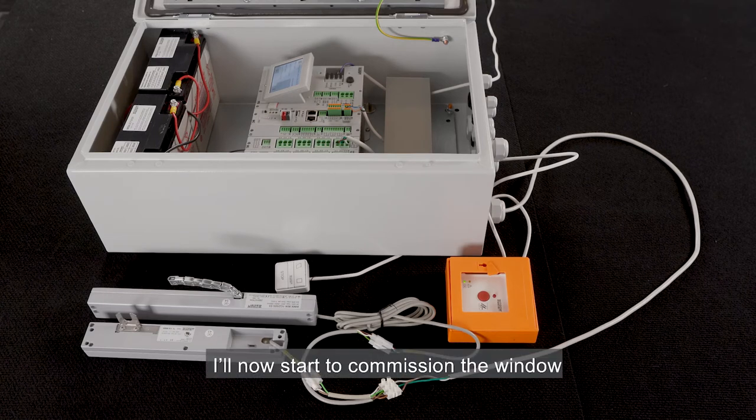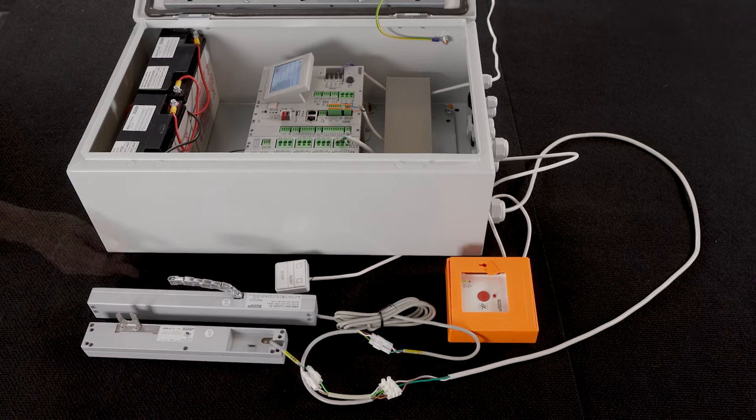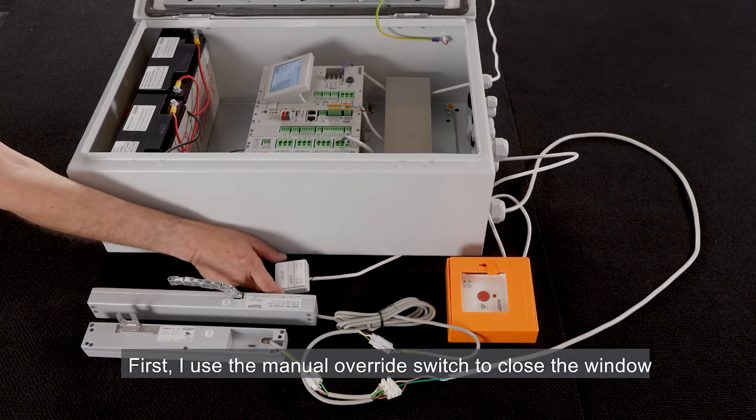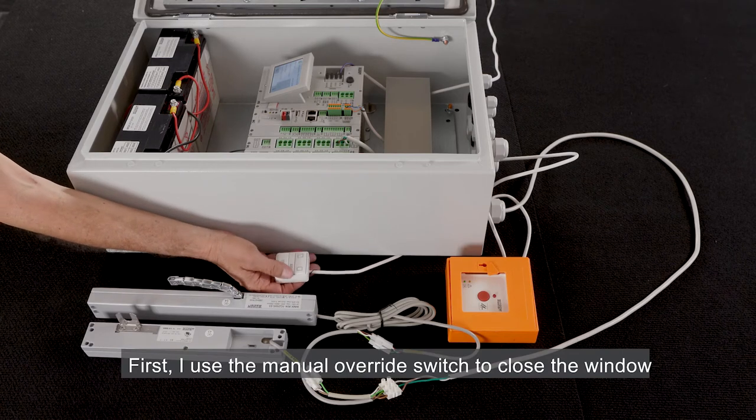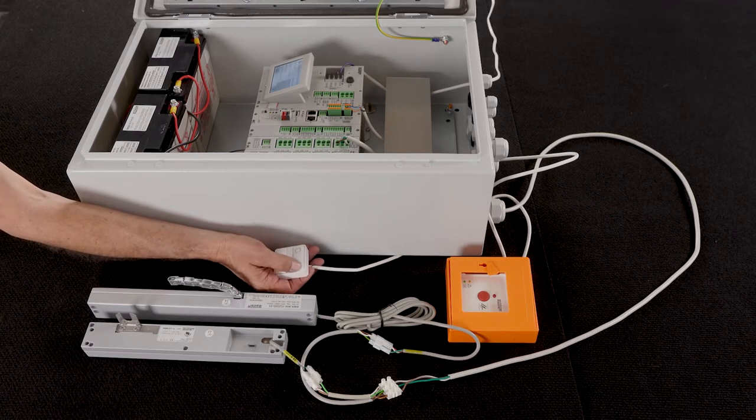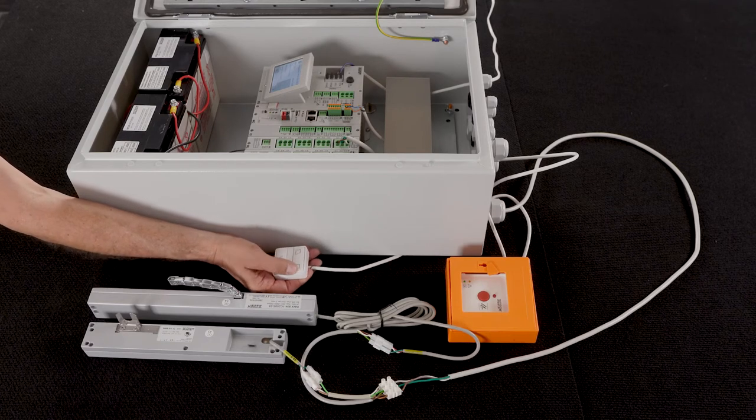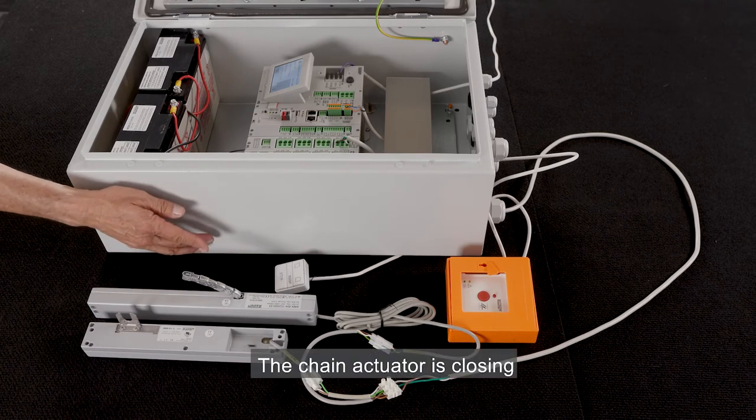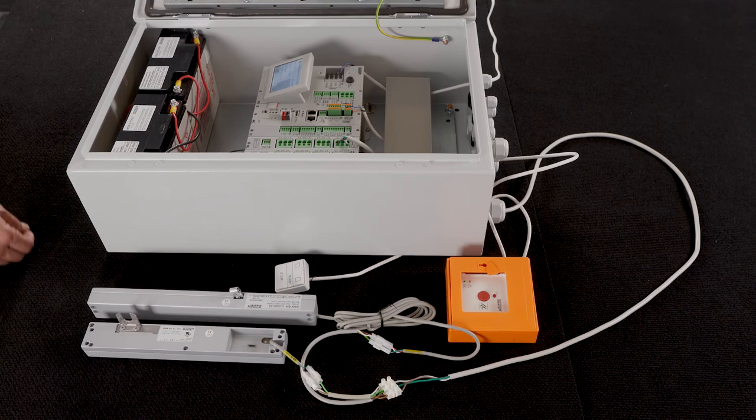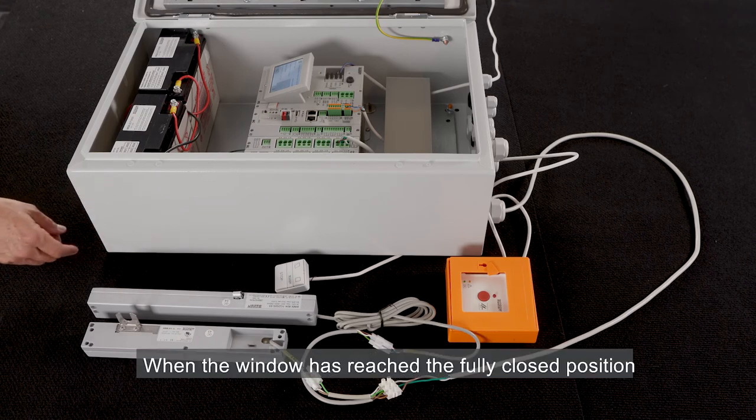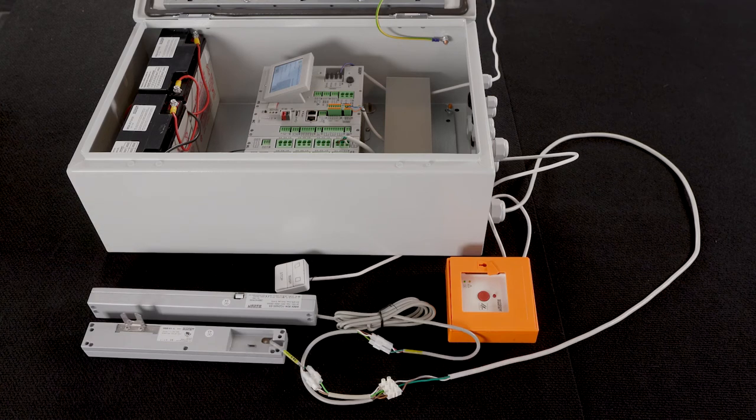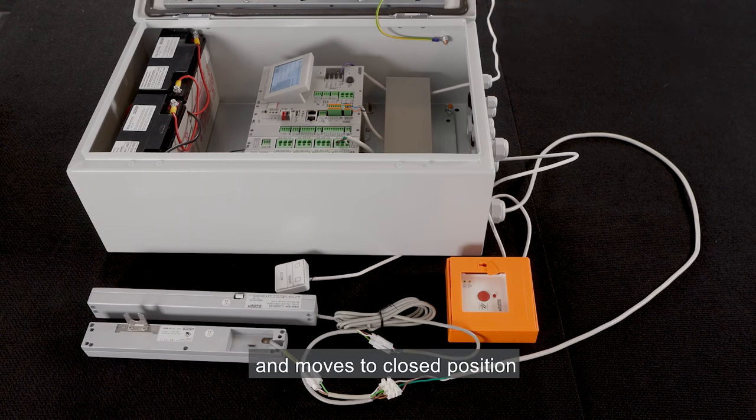I'll now start to commission the window. The window is now slightly open. First I use the manual override switch to close the window. I press the close button. The chain actuator is closing. When the window has reached the fully closed position, the locking actuator begins to run and moves to closed position.